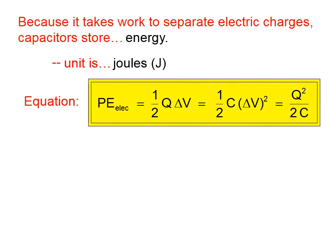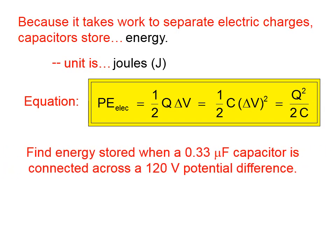Here are equations, any one of which can be used to calculate the potential energy stored in a capacitor. In this first equation, if you know the amount of charge that's stored and the voltage that has been applied, you can use that relation. If you know the capacitance and the voltage applied, you can use that relation. If you know the charge that's been moved and the capacitance, you can use that relation. These are all equivalent — the one you use just depends on what you're given.